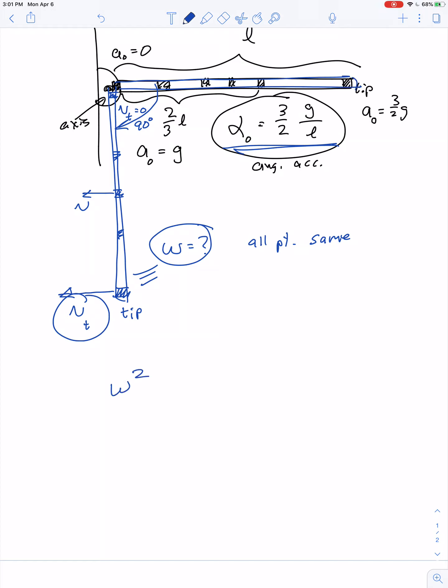I have an angular acceleration, and I have an angular displacement of 90 degrees from horizontal to vertical. So couldn't I just use an equation that says final angular speed squared equals initial angular speed squared, which by the way was 0 because it started from rest, plus 2 times angular acceleration times the angular displacement? The angular acceleration is only initially equal to 3 halves g over L. That would be the mistake, wouldn't it?